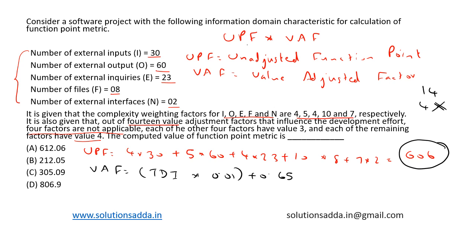Then, other 4 factors has a value 3. 4 factors has a value 3, and rest has a value 4. Rest is 6, has a value 4. So, TDI is calculated as TDI is equal to 3 into 4, plus 0 into 4, plus 4 into 6, which is equal to 36.